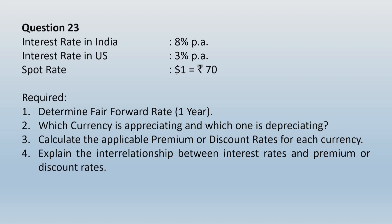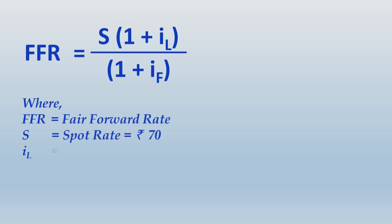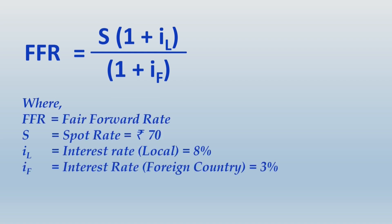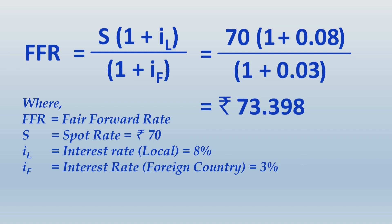Considering a 1-year forward contract, we compute the fair forward rate (FFR) by applying the formula: spot rate × (1 + IL) / (1 + IF). Define all the variables, substitute the values, and you get the forward rate as ₹73.398. The forward rate is greater than the spot rate of ₹70.